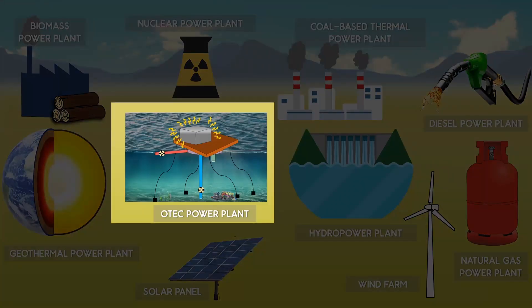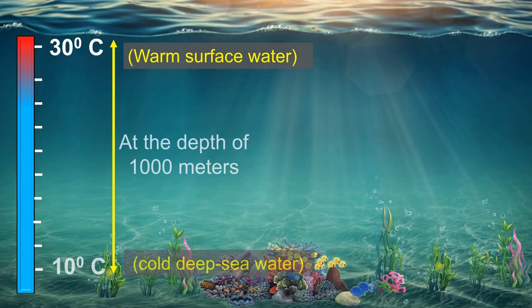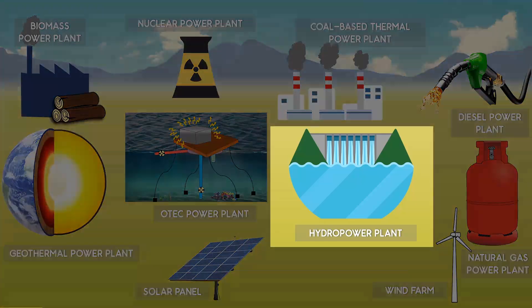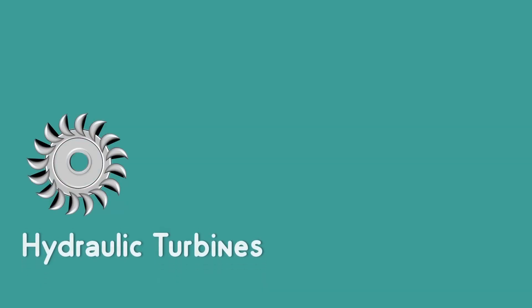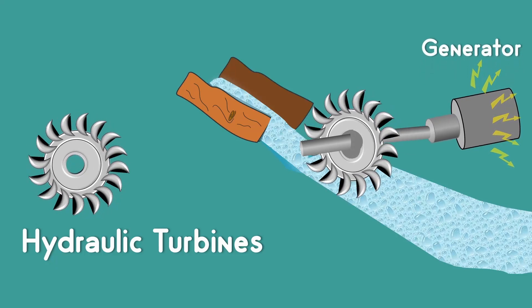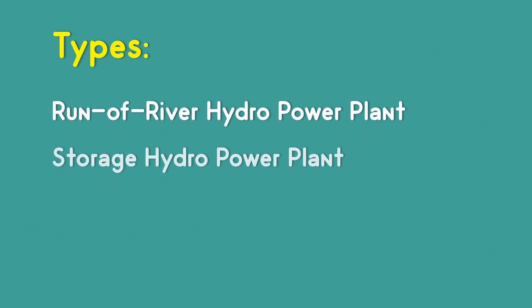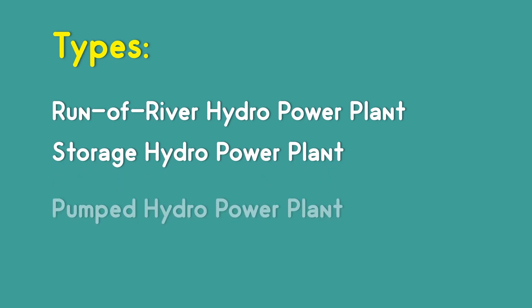Ocean thermal energy conversion or OTEC uses the temperature difference between the ocean surface water and deep ocean water to produce steam. This also provides continuous power. Hydro power plants use hydraulic turbines to generate electricity. The flowing water is given as the input to the hydraulic turbine. There are three types of hydropower: run-of-river hydropower, storage hydropower and pumped hydropower.